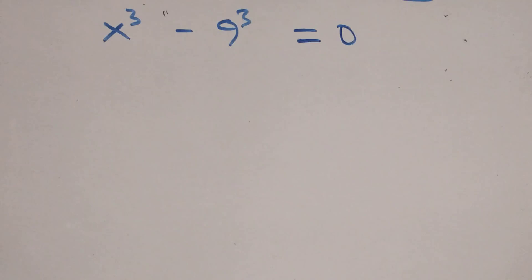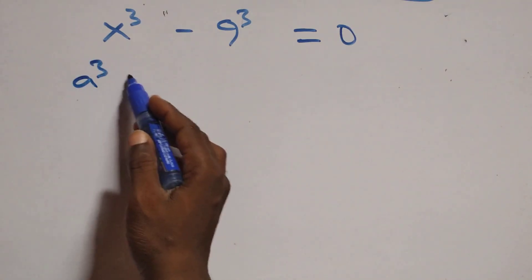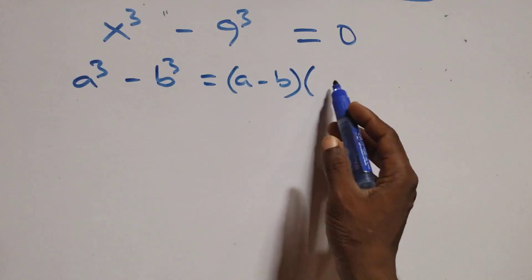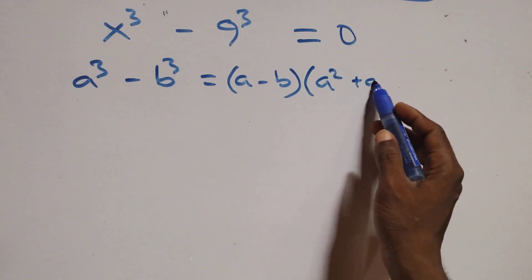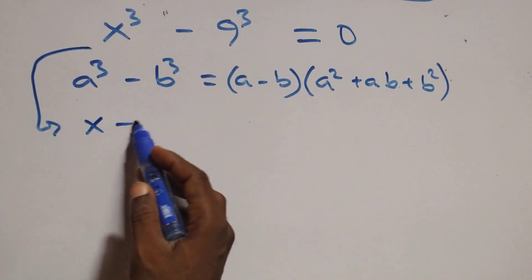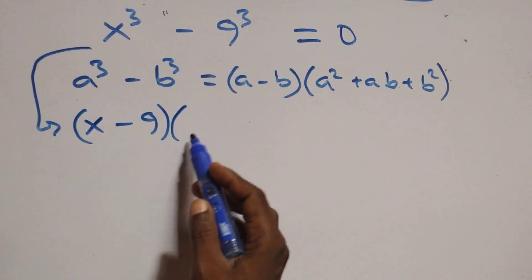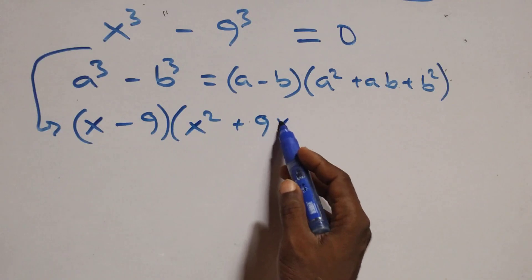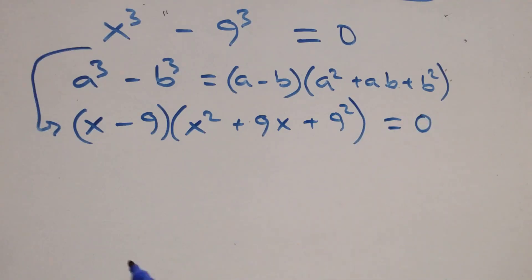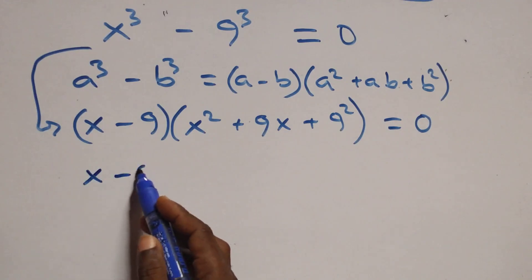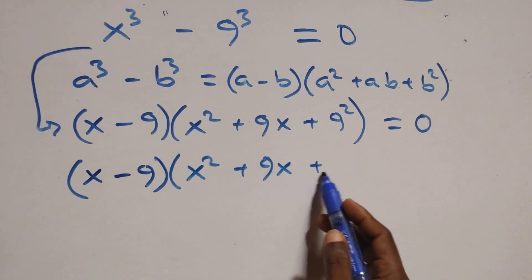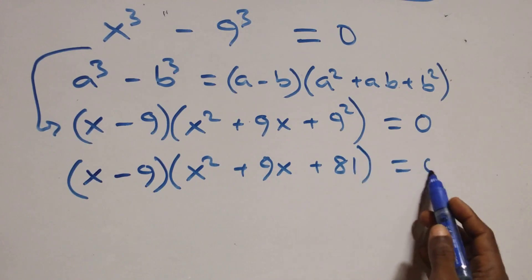Solving the second case: we apply the identity a³ − b³ = (a − b)(a² + ab + b²). So this becomes (x − 9)(x² + 9x + 81) = 0.